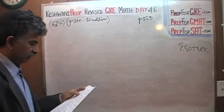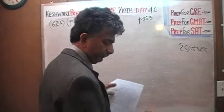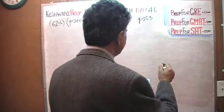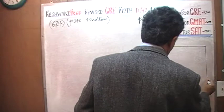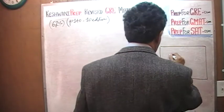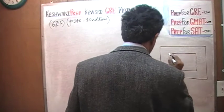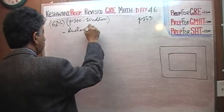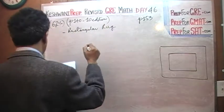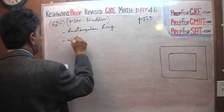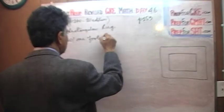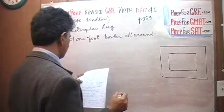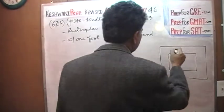The one we are about to do is one where 62% of people get it right. Here is the problem: we have a rectangular rug, and we are told it has a one-foot border all around.